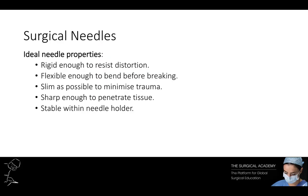Sharp needles pierce and separate tissues with minimal cutting and are used when leakage must be prevented. The ideal surgical needle should be rigid enough to resist distortion yet flexible enough to bend before breaking, be as slim as possible to minimise trauma, sharp enough to penetrate tissue with minimal resistance, and stable within a needle holder to permit accurate placement.